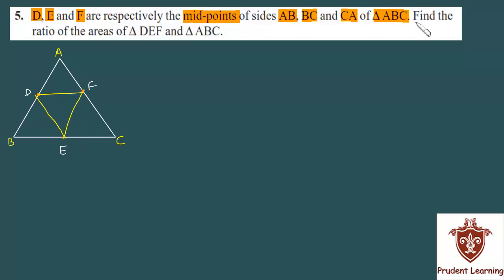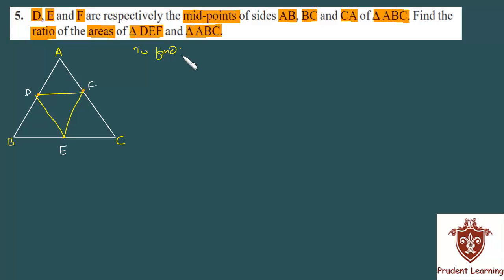Find the ratio of the areas of triangle DEF and triangle ABC, the big triangle. So the ratio of the area — we have to find area of DEF upon area of ABC.